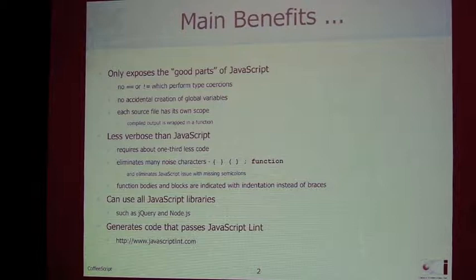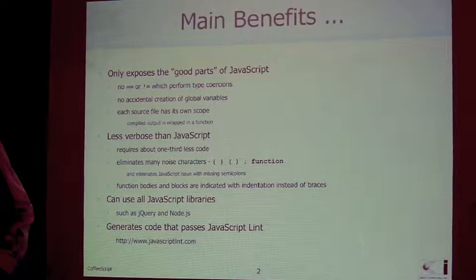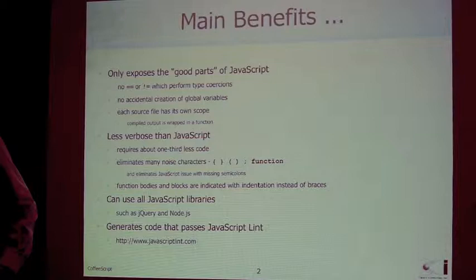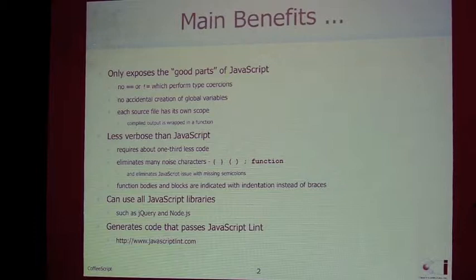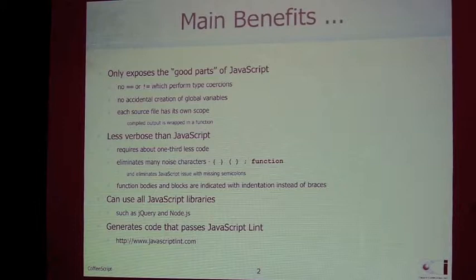What are some of the main benefits of using CoffeeScript? One thing is that CoffeeScript just exposes the good parts of JavaScript. I'm sure a lot of you have read Douglas Crawford's book, JavaScript: The Good Parts. There are a lot of gotchas waiting for you in JavaScript, and if you just stick to the good parts, everything's good. CoffeeScript won't let you use double-equal and not-equal — you have to use triple-equal. You can't accidentally create a global variable in CoffeeScript. When you declare a variable inside a function without a var, it's local. And if you have a variable declared outside all of your functions, it's scoped to that source file — it's still not global. Every source file gets its own scope; all the code in that file is wrapped inside a function which gives it that scope.